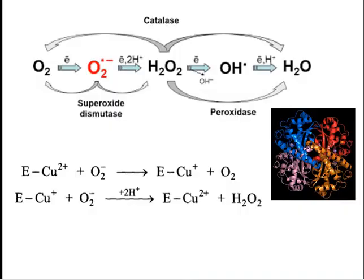Superoxide dismutase is a copper metalloenzyme with an extensive beta-pleated sheet region. It catalyzes the removal of the highly reactive and destructive O₂⁻ superoxide ions, which are free radicals produced from oxygen by a variety of reactions and by irradiation. Fridovich and colleagues in 1969 demonstrated the dismutase reaction mechanism. Bovine erythrocyte superoxide dismutase is a dimeric protein containing two Cu²⁺ ions and two Zn²⁺ ions. The Zn²⁺ ions appear to have a structural rather than catalytic role, while the Cu²⁺ ions are involved in the reaction sequence.